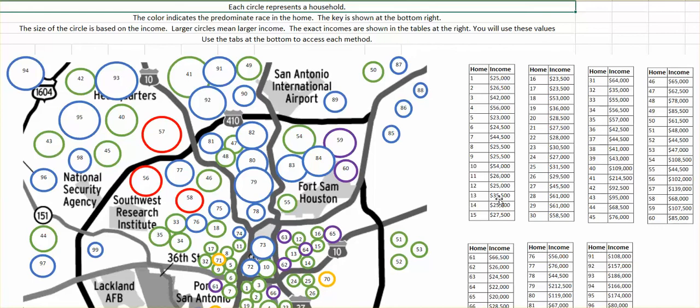And the number tells you over to the side to find the actual income. The larger the circle means the larger income, but to find the exact number, you're going to look at the table. Let's go through some different ways to find a sample.